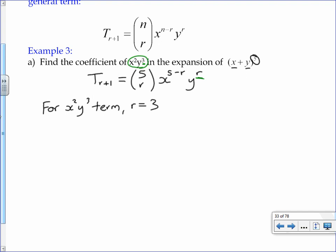And that works for both of them. If you have a look at the x term, 5 minus 3 is 2, which is what we want from our x term as well. So by inspection, we can say that r is going to have to be 3. And if we substitute that all back in, it tells us that effectively the fourth term, because 3 plus 1 is 4, the fourth term is going to be 5 choose 3 times x to the power 2.